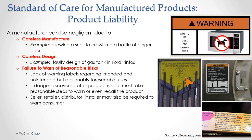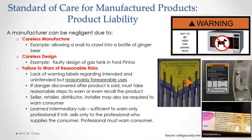Who has the obligation to provide a warning? It can be the seller, the retailer, distributor, or even the installer. There is the learned intermediary rule, which applies when a product is sold not directly by the manufacturer to the consumer, but by a professional to the consumer. An example is breast implants — you would get those from a plastic surgeon, not the manufacturer. In that case, the learned intermediary — the plastic surgeon — has the obligation to warn the consumer. The manufacturer's obligation is only to warn the professional.